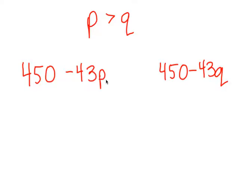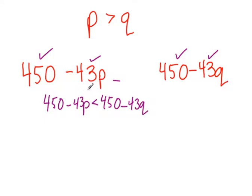Alright, on this one, I'm going to think this through. 450 and 450 are the same, and 43 and 43 are the same. P is larger than Q, so if you think about it, 43P is going to be larger than this. So I'm going to be taking more out of 450, so that should be the lower number. So I'm going to say 450 minus 43P is less than 450 minus 43Q. Okay, you take away 450 because that's the only thing that can go together.